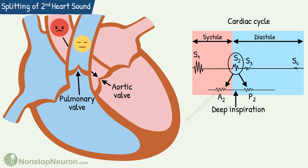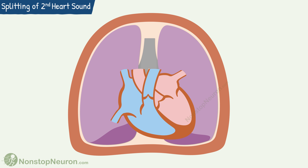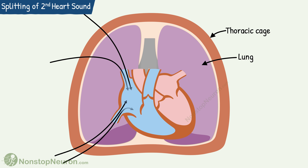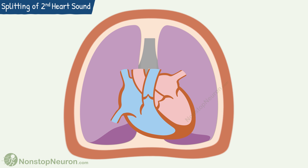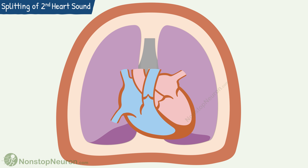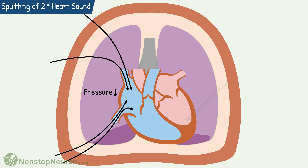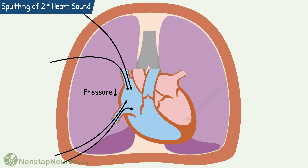Now during deep inspiration, this splitting is accentuated. In this diagram, this boundary represents the thoracic cage and these are lungs. The right heart receives blood from all over the body and the left heart receives blood from the lungs. During deep inspiration, the thoracic cage expands, so intrathoracic pressure decreases and venous return to the right heart increases. But at the same time, expansion of the lungs tends to hold blood in the lung itself, so the amount of blood entering into the left ventricle decreases. Thus, during deep inspiration, the right ventricle receives more blood as compared to the left ventricle.